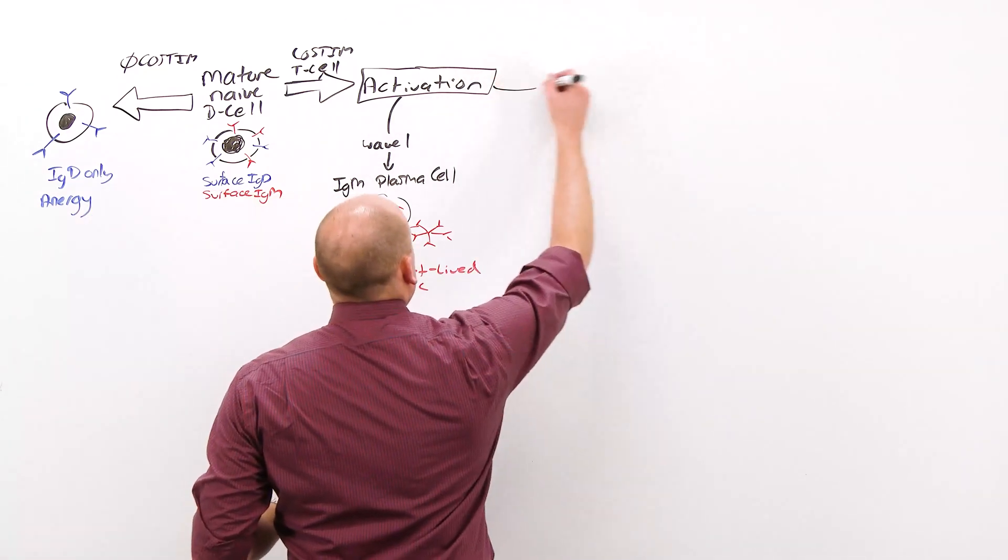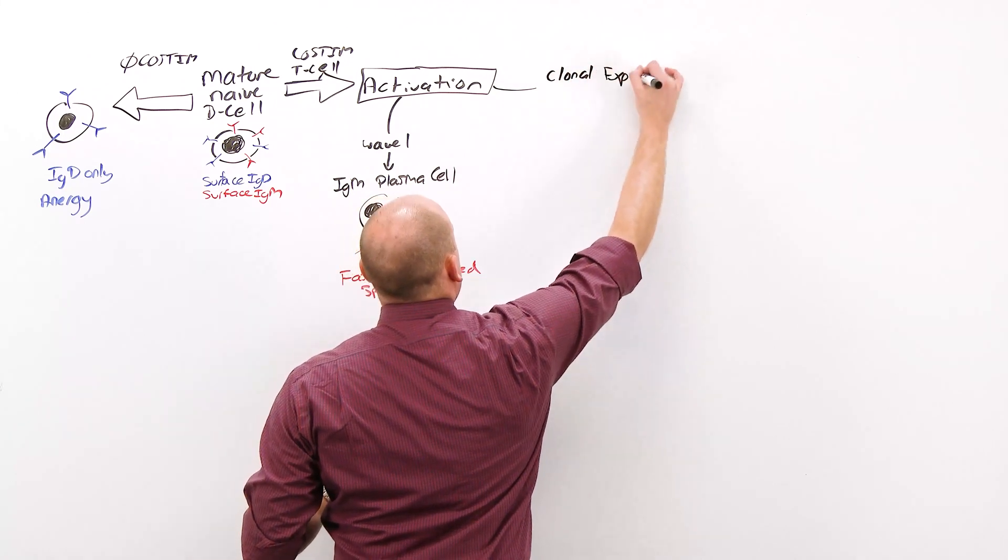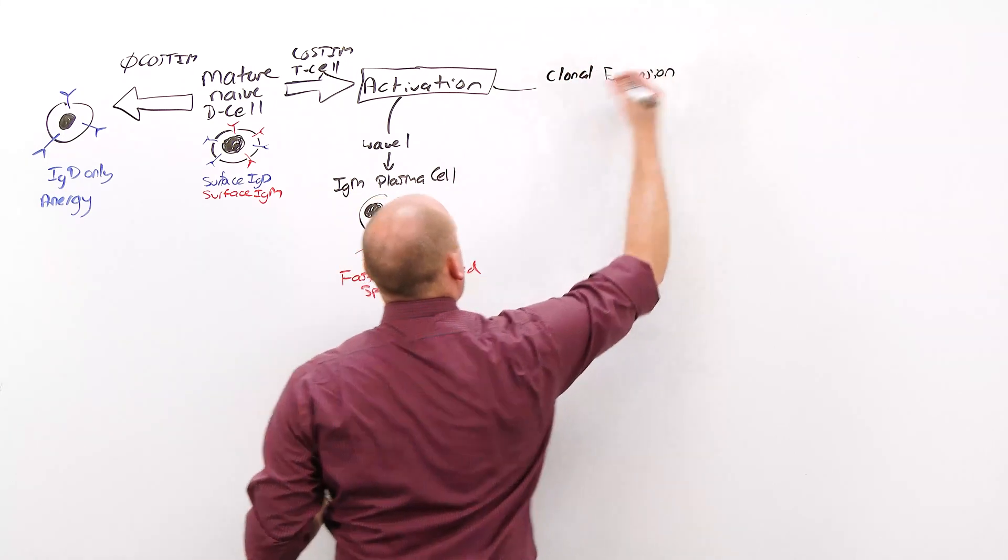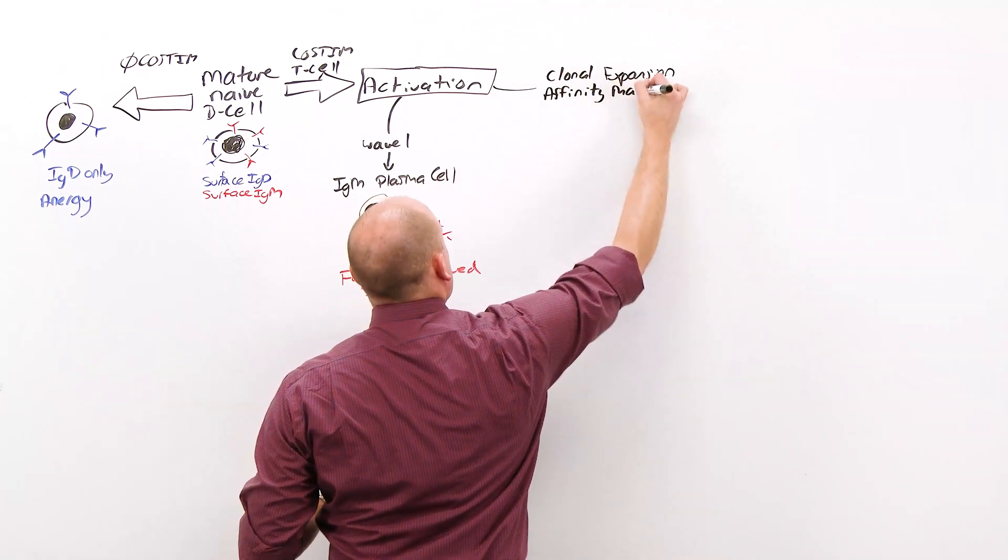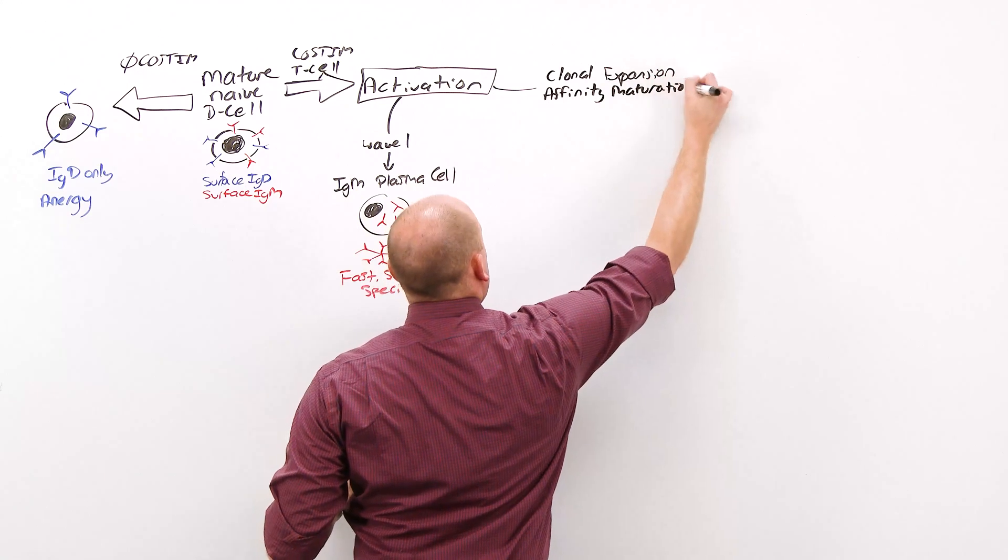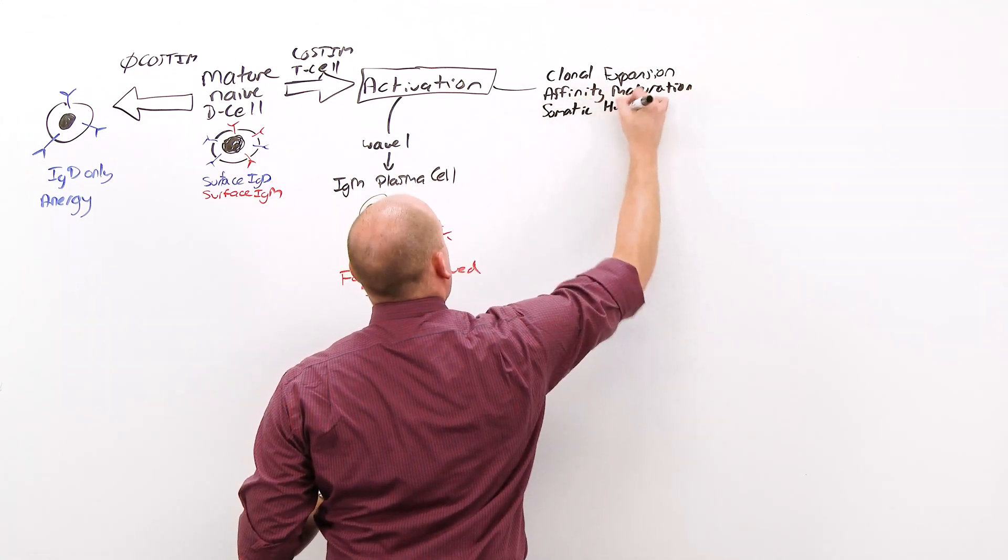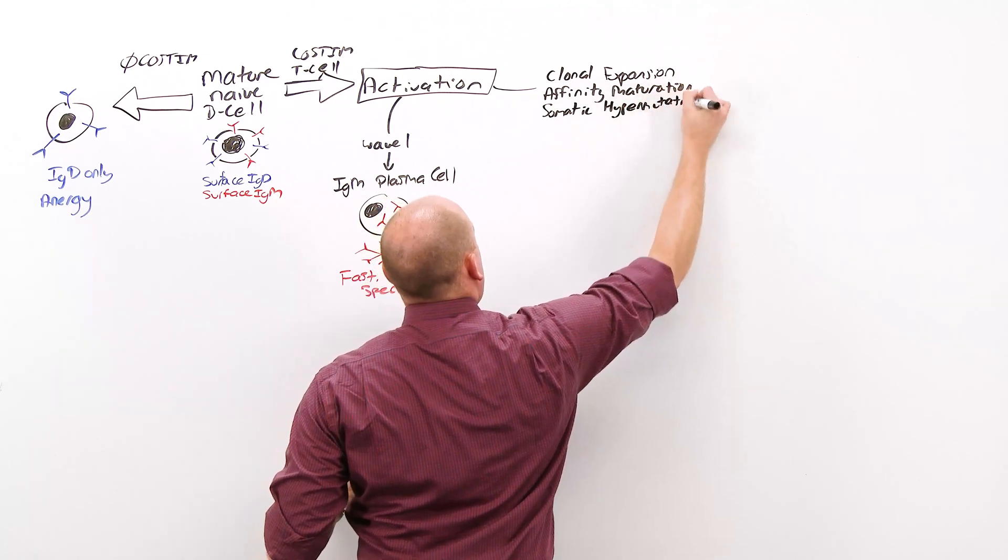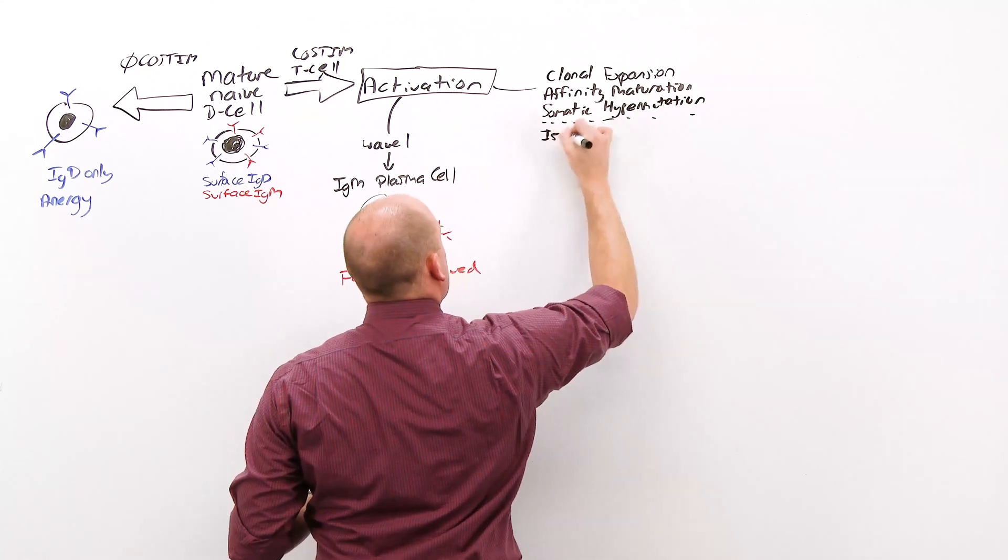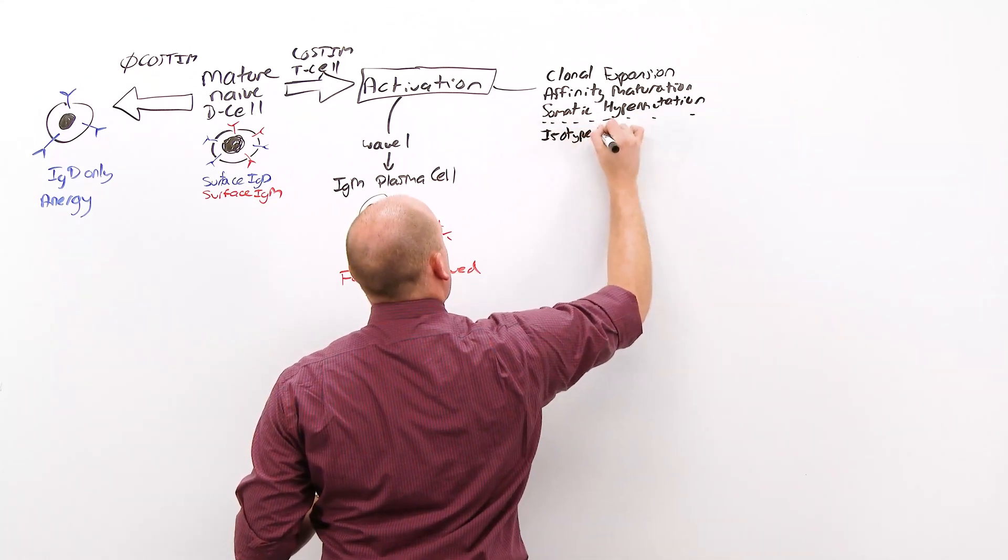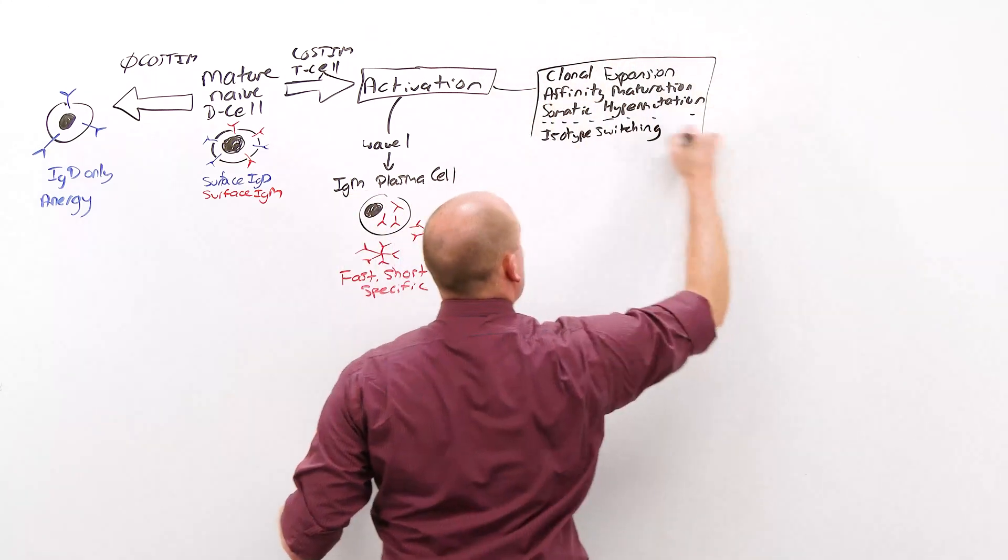Activation also means clonal expansion. That means proliferation. And it will proliferate through the principle of affinity maturation because of somatic hypermutation. We'll explain all of these in a minute. And along with that, isotype switching. Scary and daunting. Hang on to it. We'll come back to it right after this next set.